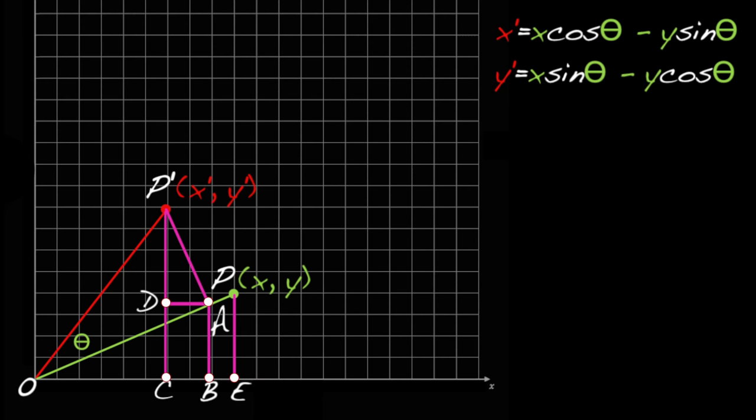This diagram now has all the information we need. Let's get some practice using this diagram by deriving a couple of formulas we'll need later. Suppose r is the distance from the origin O to P. And let phi be the angle that OP makes with the x-axis.